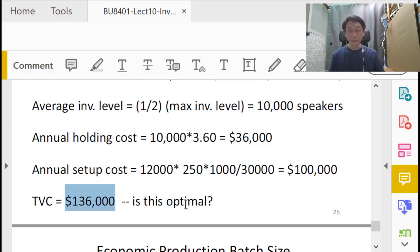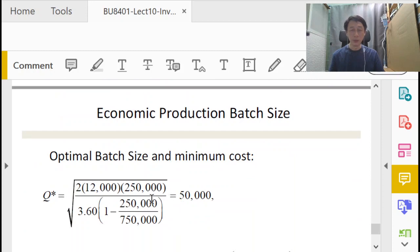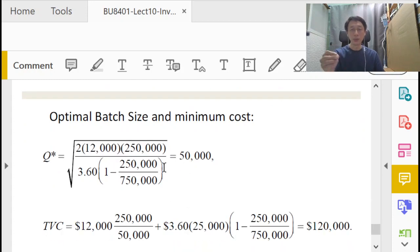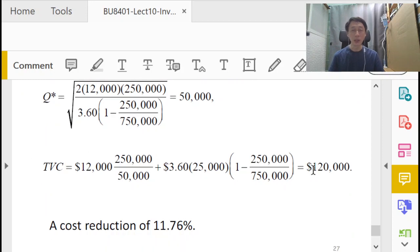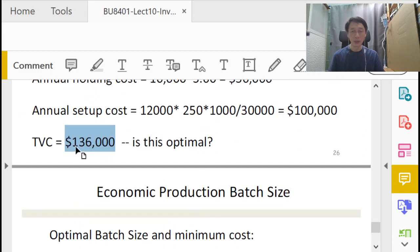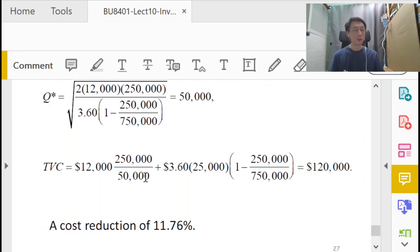Can we do better? Let's calculate the optimal order quantity in the presence of finite production rate. We substitute the quantities into the formula and get 50,000. In other words, the factory should be manufacturing each batch run at 50,000 units rather than 30,000 units. Substituting into the total cost calculations, we get $120,000. Without doing anything different—just having a different batch quantity—we immediately experience savings of $16,000 without borrowing money or investment.